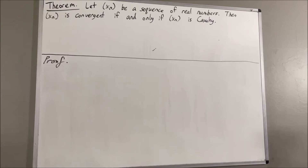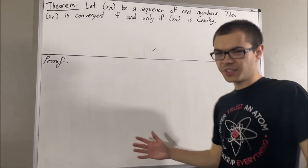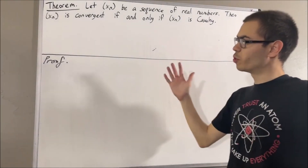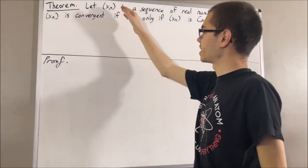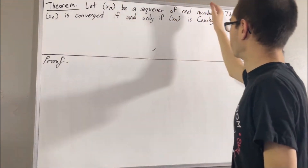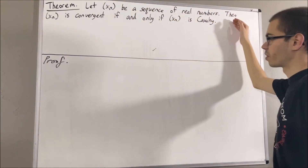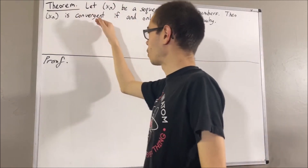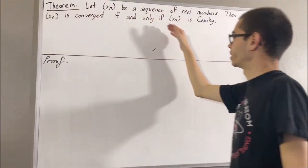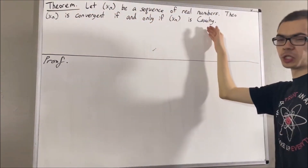Hello! In this video, we are going to prove the following theorem. Let xn be a sequence of real numbers. Then, xn is convergent if and only if xn is Cauchy.